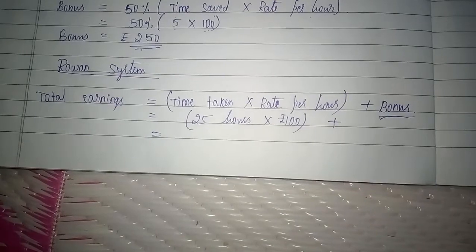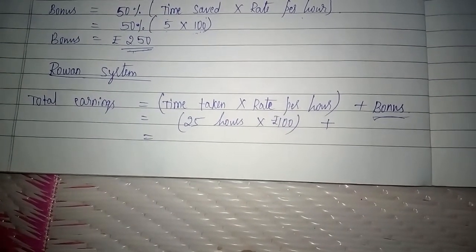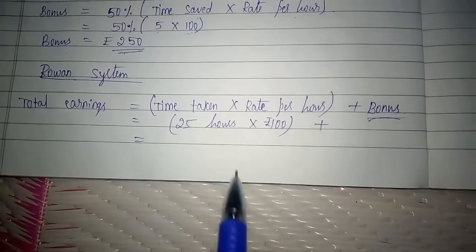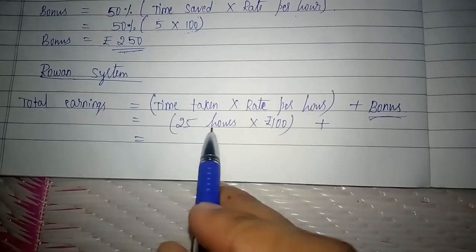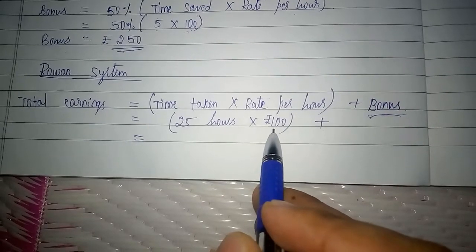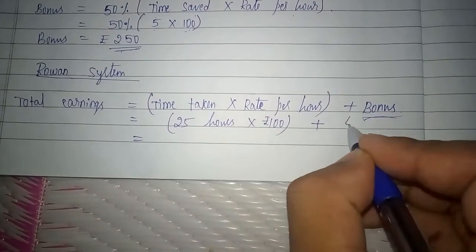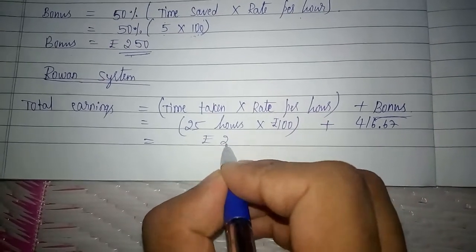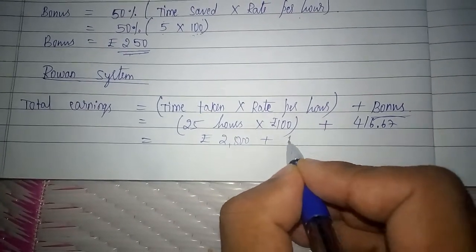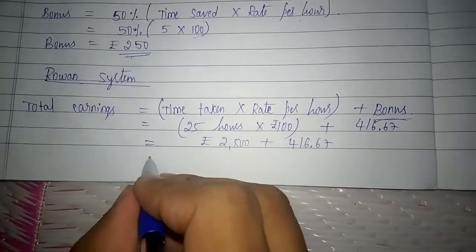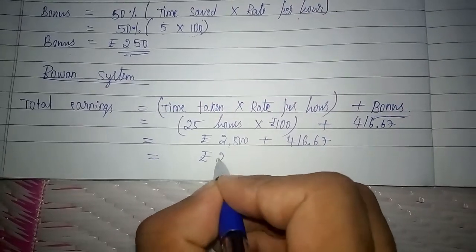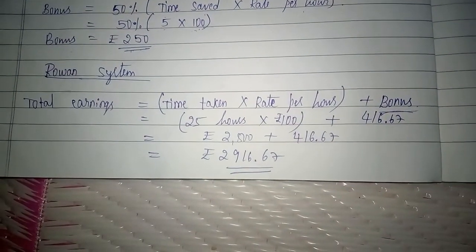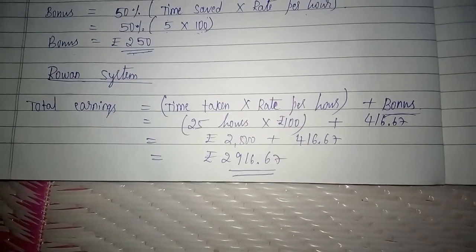After calculating the bonus under Rowan system, let us calculate the total earnings of the worker. Total earnings = time taken × rate per hour + bonus. Time taken is 25 hours, rate per hour is rupees 100, and bonus we calculated is rupees 416.67. So 25 × 100 = rupees 2,500 plus rupees 416.67 bonus = rupees 2,916.67. This is the total earnings of the worker as per the Rowan system.